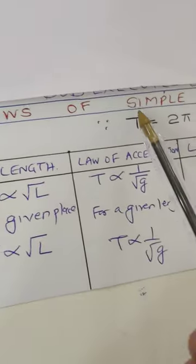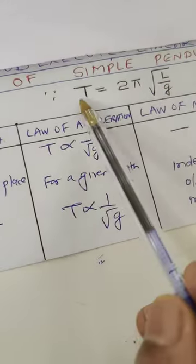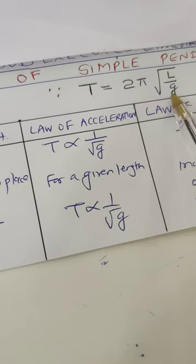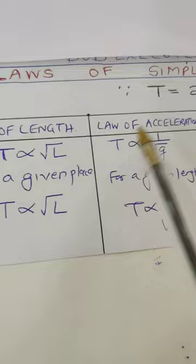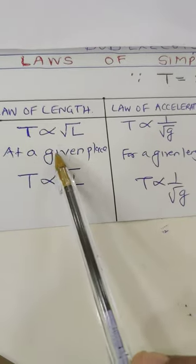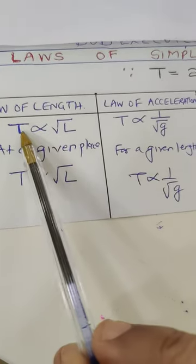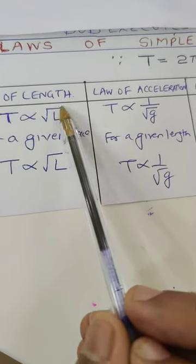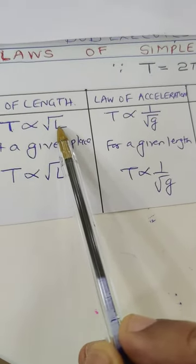What is law of length? Tell me what is T's relation with l? Can you see directly proportional to root l? Provided g is constant. g is always constant at a given place. So at a given place, period of a simple pendulum is directly proportional to square root of length of the simple pendulum.